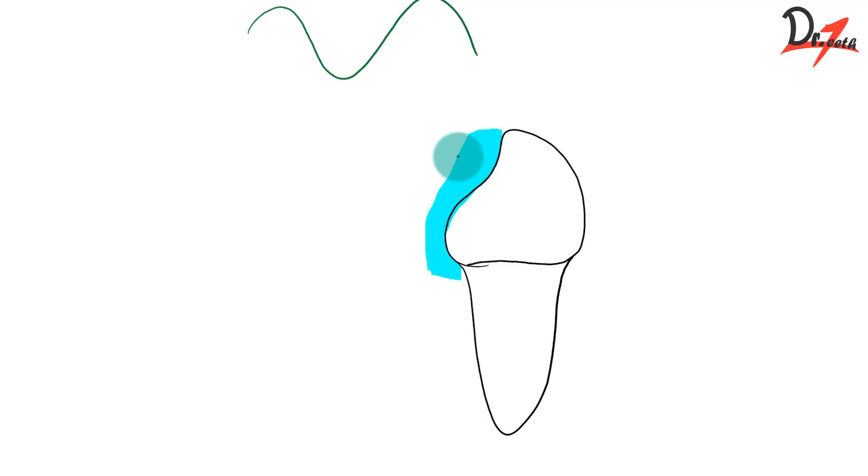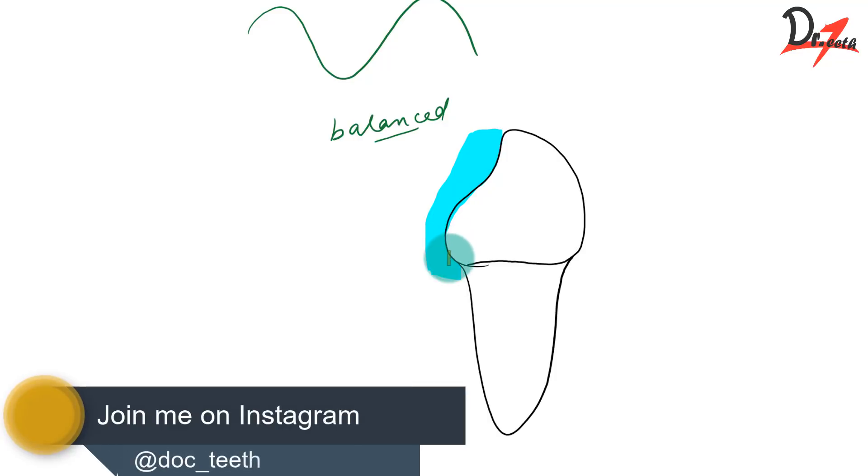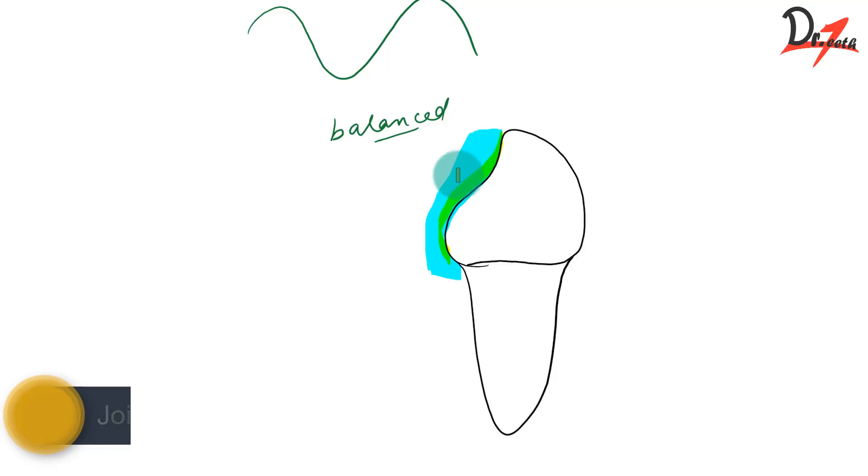minerals in the saliva, so a balance is maintained. So in cases when we have the plaque accumulation and the bacteria will act here, so they will produce organic acid. So the pH of this area will drop and this balance will be disrupted. So minerals such as calcium and phosphate they will leave the enamel surface and they will